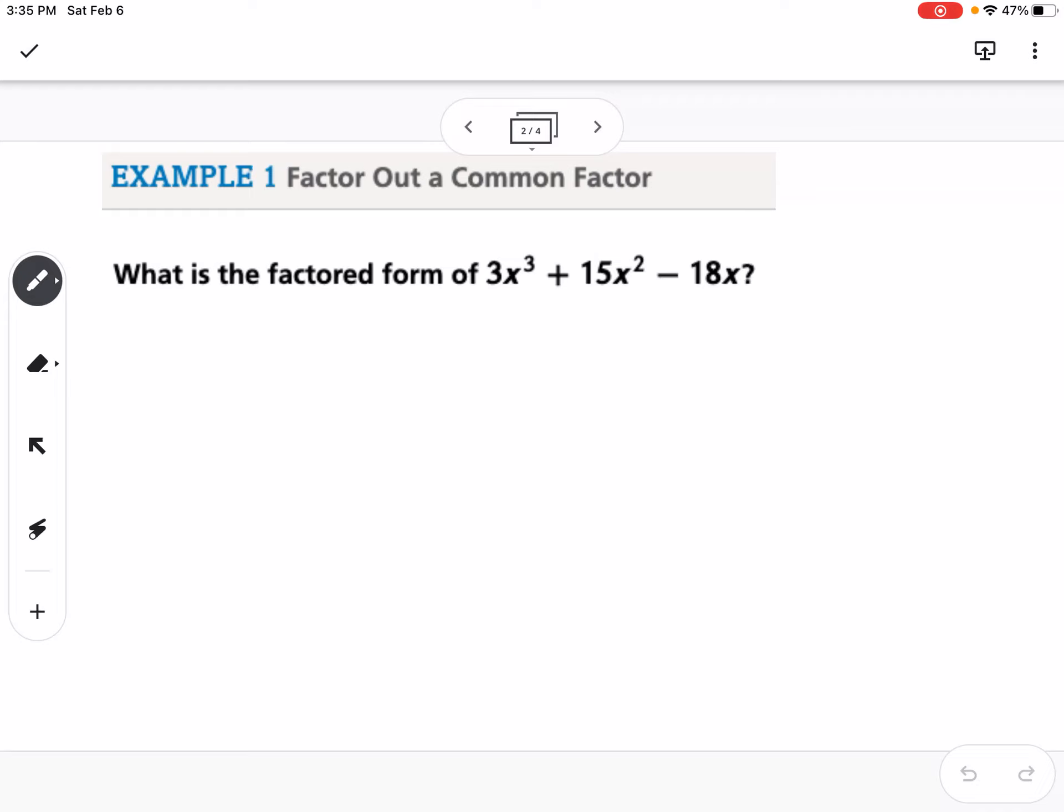Okay, so the first one is sometimes we don't have to make it super complicated if we have a greatest common factor. So it says, what is the factored form of 3x cubed plus 15x squared minus 18x?